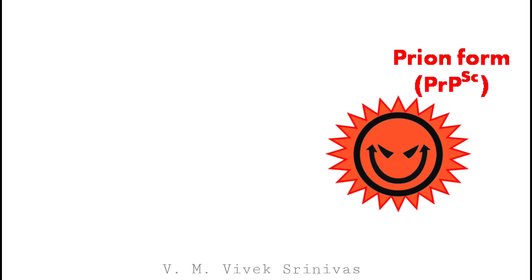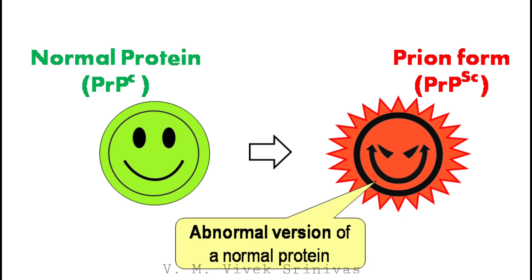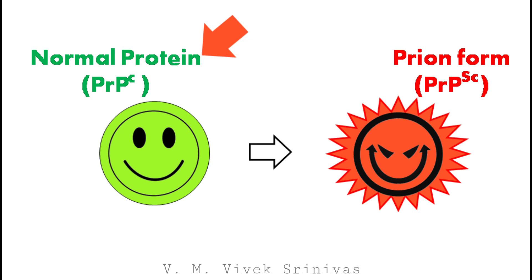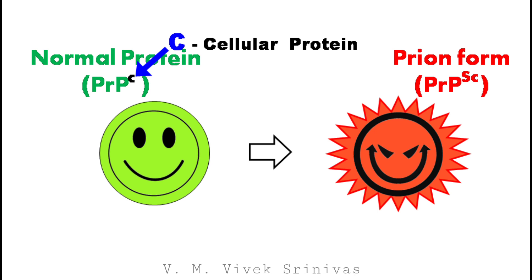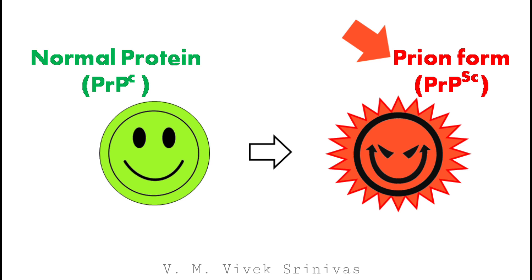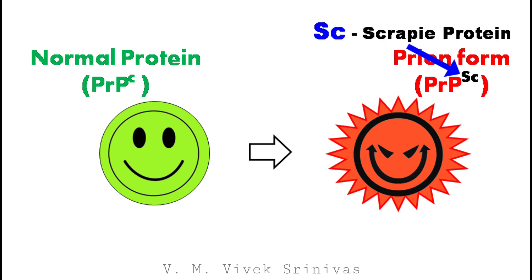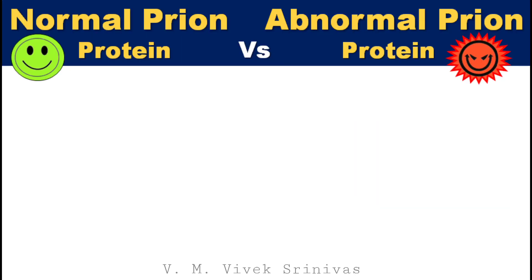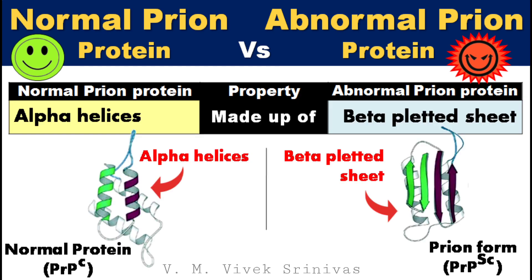These prion proteins are the abnormal version of a normal protein. The normal prion proteins are designated as PrPC, where the superscripted C represents the normal cellular prion protein. But the prion proteins are designated as PrPSC, where the superscripted SC represents the scrapie protein. The normal prion proteins are made up of alpha-helical structures, but the abnormal prion proteins are made up of beta-pleated sheet structures.